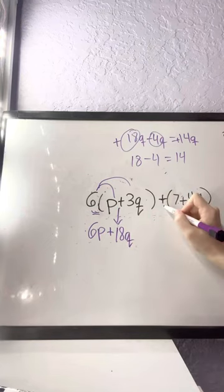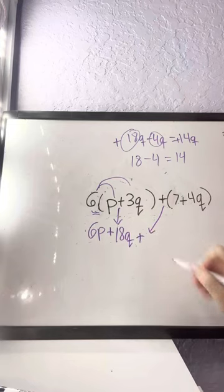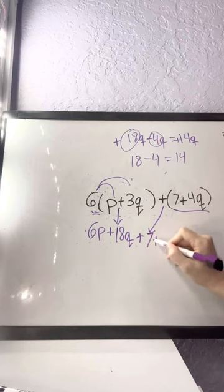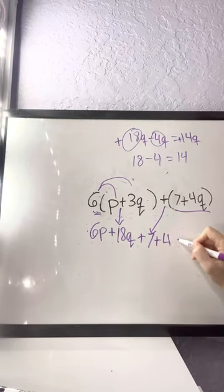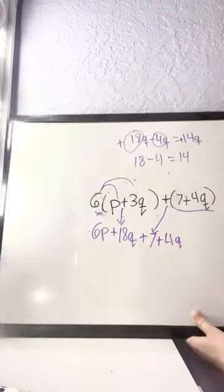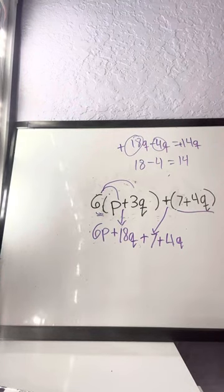And then all you're going to do simply is just bring down the positive sign in the middle, and then put the rest of the term behind it, so 7 plus 4q, that's it. What it's adding is different.